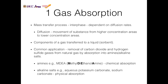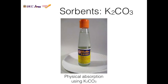The sorbent used to remove CO₂ and H₂S from natural gas is amines or alkaline salts. One example is MDEA, methyl diethanolamine, which absorbs gas through chemical absorption. Two popular alkaline salts are aqueous potassium carbonate and sodium carbonate, and these absorb gas through physical absorption. Potassium carbonate solvent is an example of an alkaline salt sorbent that absorbs gas through physical absorption.